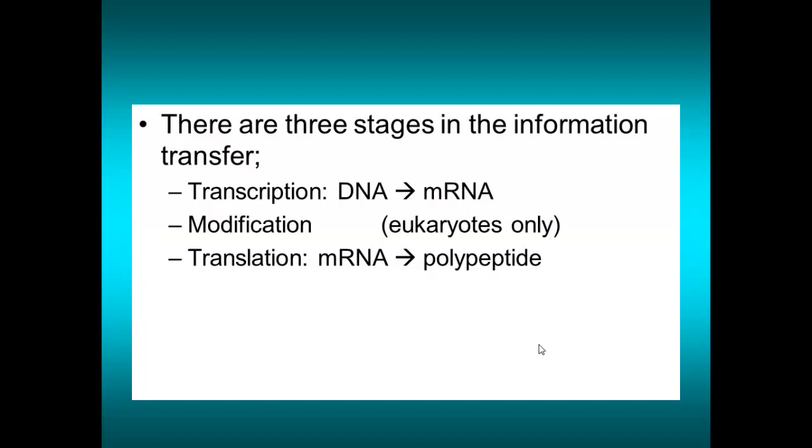There are three stages involved in this information transfer. Number one is transcription: taking DNA, reading it, and making an mRNA copy of it. The second stage only occurs in eukaryotes — it is modification. Then on to translation, common to both prokaryotes and eukaryotes, which is reading mRNA and using it to determine the sequence of amino acids in a polypeptide.